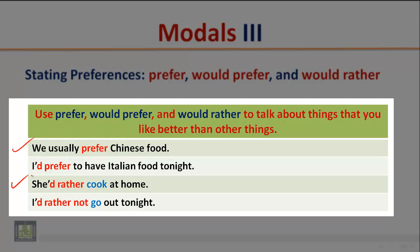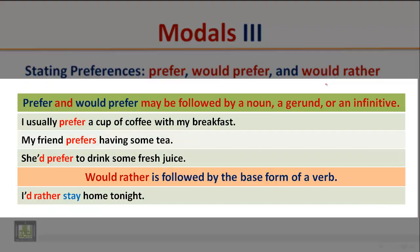The third example implies that she prefers to stay home and cook — she doesn't like to go out. 'Prefer' and 'would prefer' may be followed by a noun, a gerund, or an infinitive. A gerund is a verb plus '-ing.' An infinitive is 'to' plus the base form of the verb.